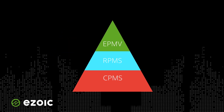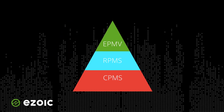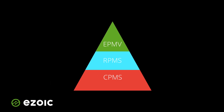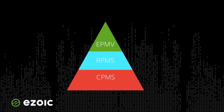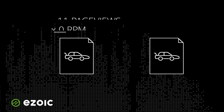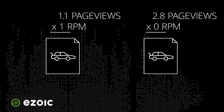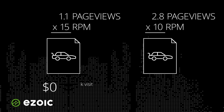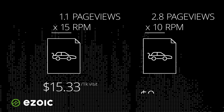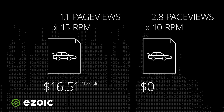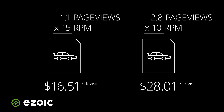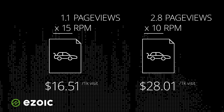RPM simply calculates total page views, so it doesn't account for the value of each visitor. In this example, you can see how an article with a higher RPM actually generates less total revenue than the article with a lower RPM.